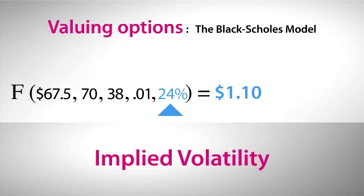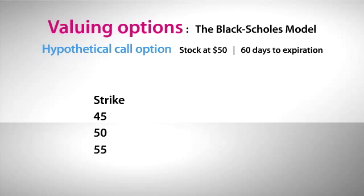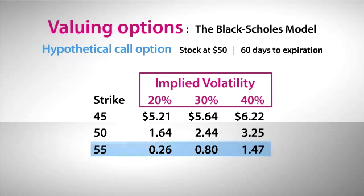When traders think a stock might move sharply, they're willing to pay more for options, creating higher implied volatility. Here's how this impacts option prices: these are the theoretical values for various call options that expire in 60 days on a hypothetical stock now trading at $50. As option prices get higher, those prices reflect a higher implied volatility. Notice that the out-of-the-money option — the 55-strike call — is impacted most, at least in percentage terms.